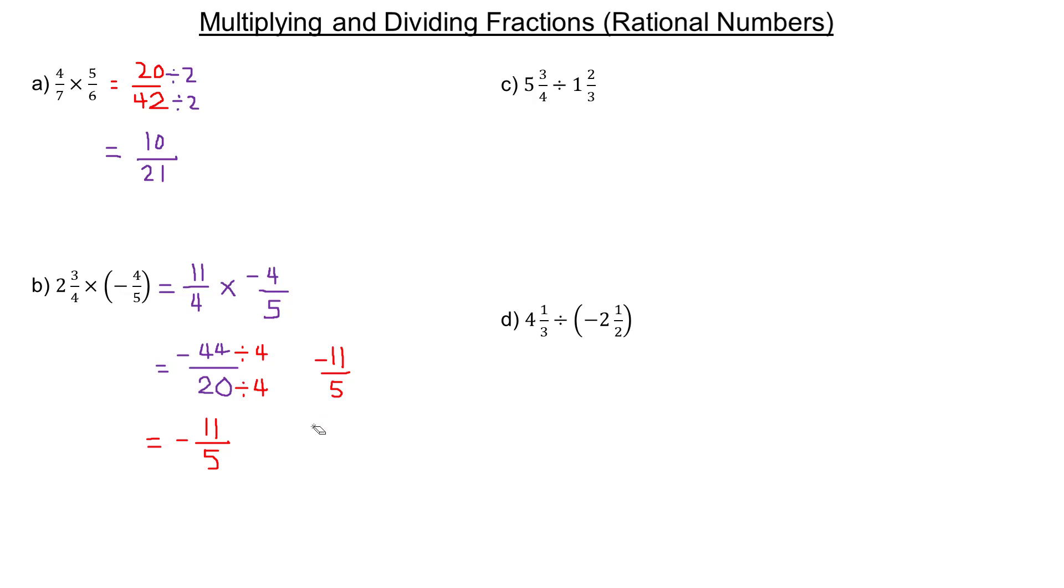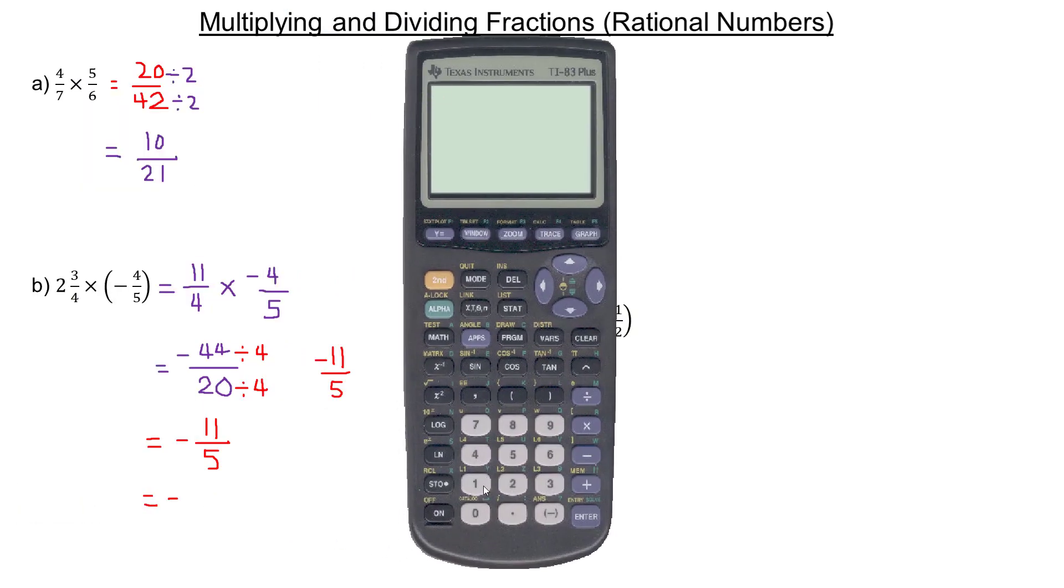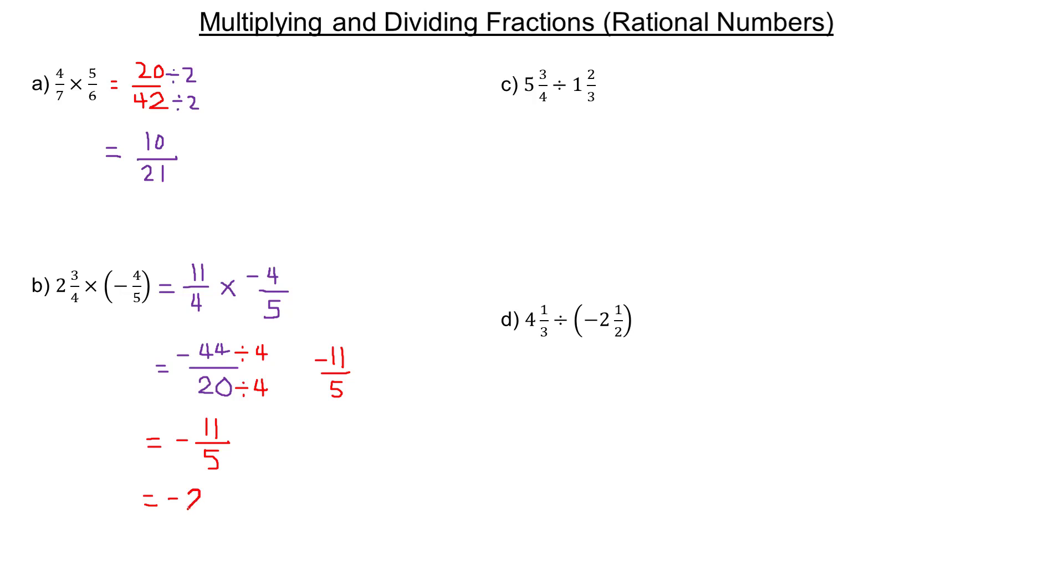It's improper because 11 is bigger than 5. The answer is still negative. How many times does 5 go into 11? It goes in twice. 2 times 5 is 10, and there's 1 more to make 11. So this is -2 and 1/5.